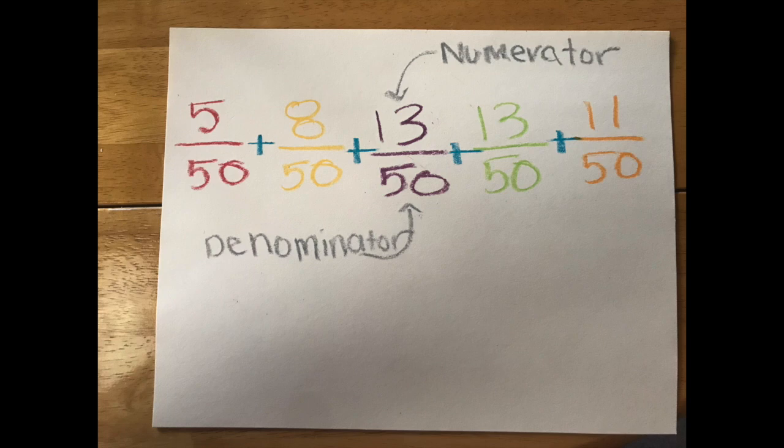Create a fraction for each of your Skittle colors. Then try and add your fractions up. All of your Skittles are part of a whole. The whole is the denominator, or in my case the number 50.